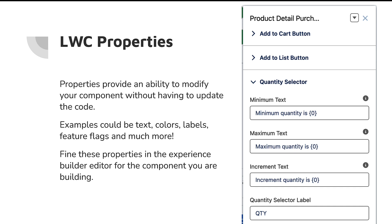We're going to be focusing primarily on Commerce Cloud and Experience Builder. You can see on the right-hand side we have a product detail component with several text fields. Everything is wrapped inside of an accordion, which makes it really nice and easy to configure, especially if you have a lot of attributes. Up until recently, this really hasn't been possible — we haven't had the flexibility to modify the properties UI. But now, with some recent updates, we do.